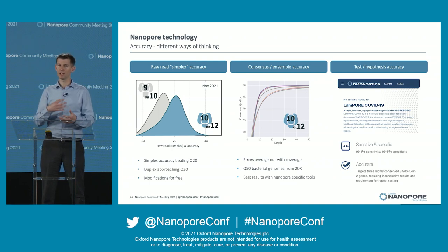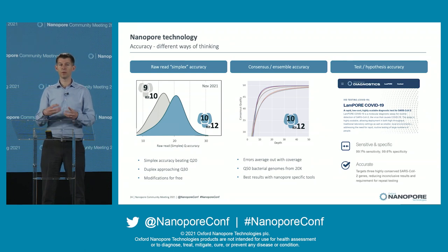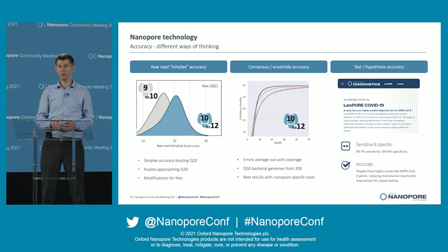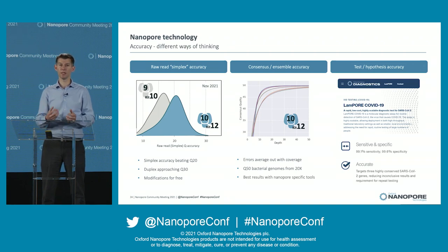We're seeing Q50 bacterial genomes from fairly modest coverage around 20x, and you get the best result using Nanopore-specific tools that understand the data. We can also have test or hypothesis accuracy — do I have this thing or not? And unlike many, last year we turned our hand to developing a COVID test, and our LamPORE test was shown to be highly accurate, highly sensitive, specific — right up there with the best PCR assays.